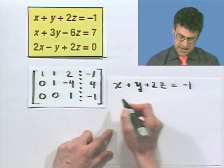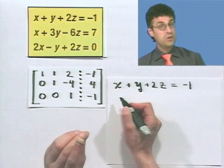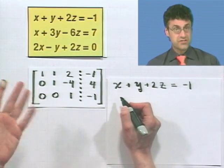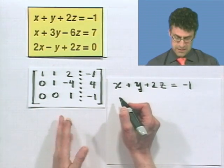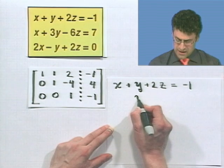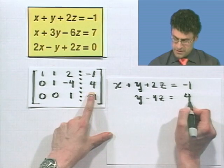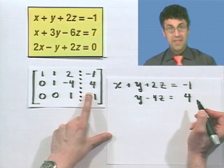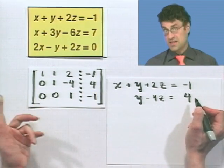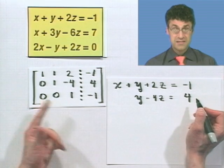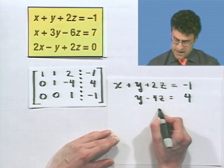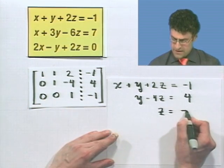And the second one says 0x. Now, this is the beauty of this. 0x is just 0. So I'm going to actually not even write it. But I've got 1y, which I'll write kind of in the y spot, minus 4z equals 4. And the last one says 0x's, that's just 0, plus 0y's, that's just 0, plus 1z equals negative 1.